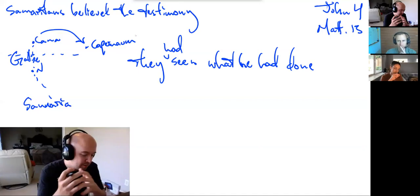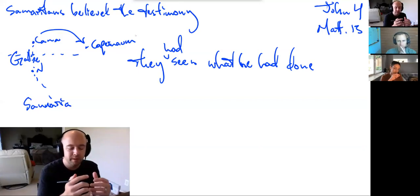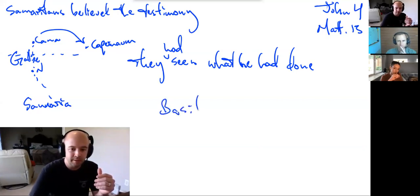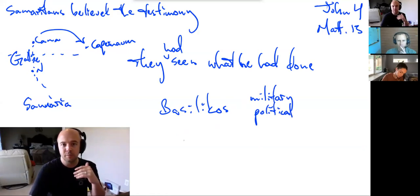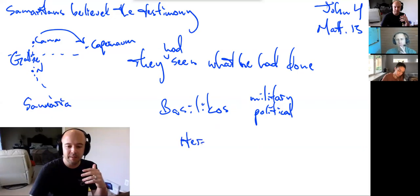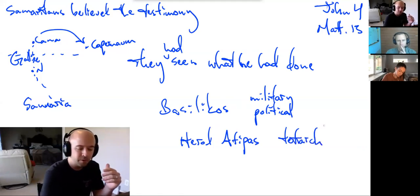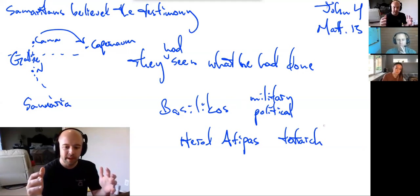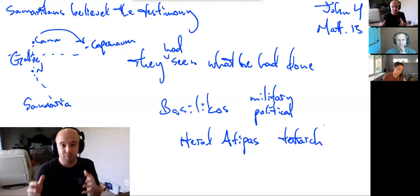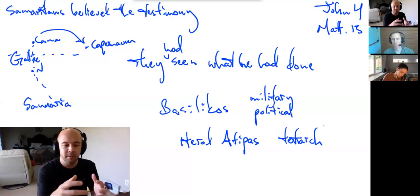He stays there for a few days and he stays there long enough for somebody who's outside of Cana to travel now and meet him and make a request of him. So Alyssa, can you reread 46 and 47 for us? Once more, he visited Cana in Galilee where he had turned the water into wine. And there was a certain royal official whose son lay sick at Capernaum. When this man heard that Jesus had arrived in Galilee from Judea, he went to him and begged him to come and heal his son who was close to death.